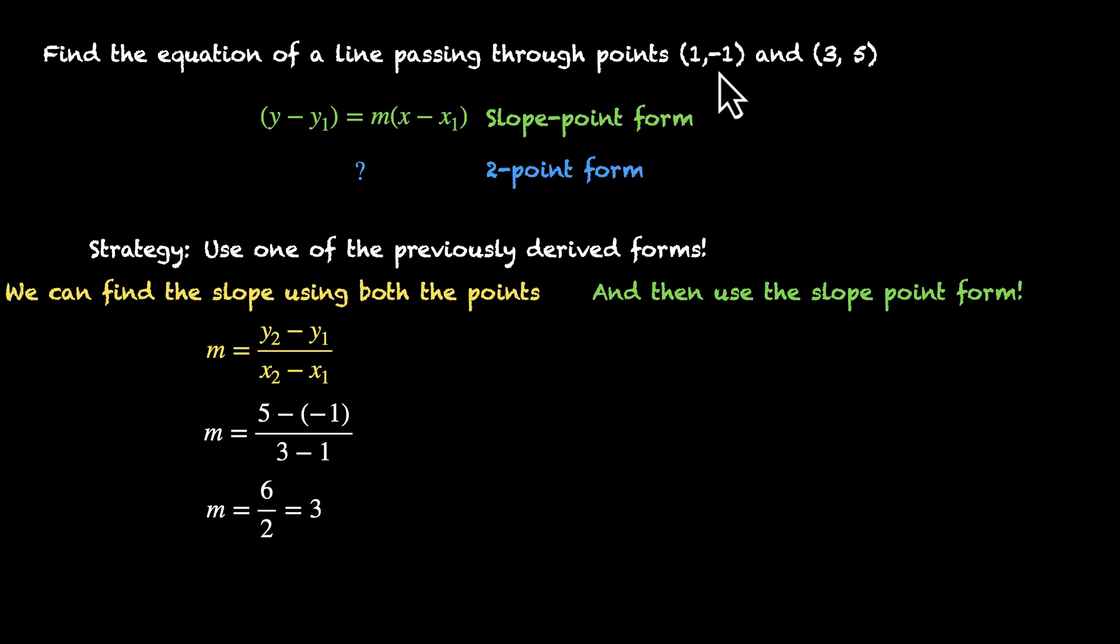And we have the points. So we can use the slope point form. That's y-y1 equals to m times x-x1. So that's y minus -1 equals to 3 times x-1. Now we can rearrange and get the equation. This is y plus 1 equals to 3x minus 3. And that's y equals to 3x minus 4. So this is our equation of this line.